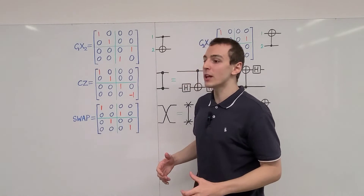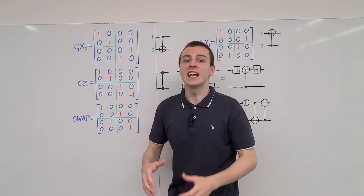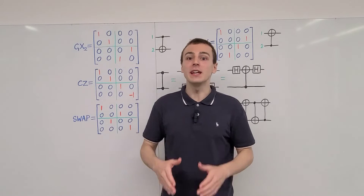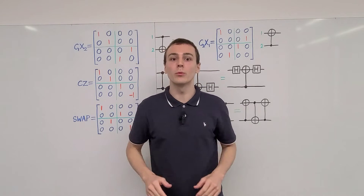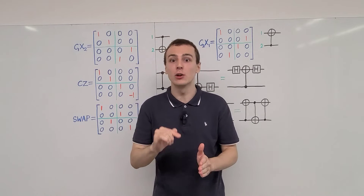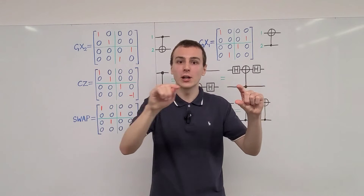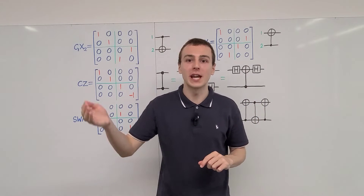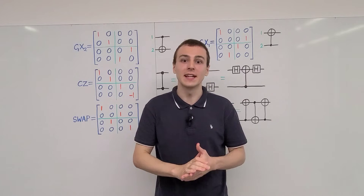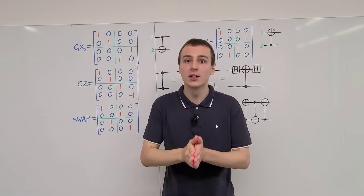Now we have the computational basis for a two-qubit Hilbert space, and we're going to look at unitary operators. These matrices are unitary operators that act on states. The matrix representation of states would be column vectors — a ket state is a column vector with four entries. A bra is a row vector with four entries where all entries are complex conjugated. That is how we go from a ket to a bra in Dirac notation.